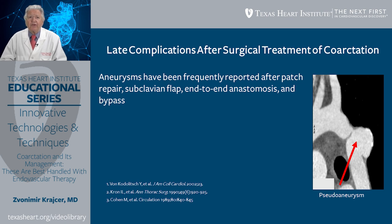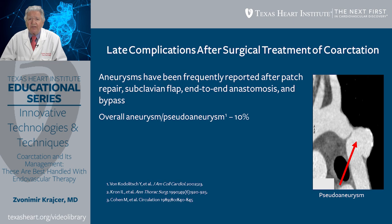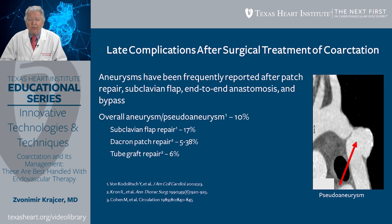I would like to share some of the complications, particularly late complications after surgical treatment of coarctation. Aneurysms have been frequently reported after patch repair, but also after subclavian flap, end-to-end anastomosis, and bypasses. As we can see here, a pseudoaneurysm has formed at the site of previous surgical repair. The overall incidence of aneurysms and pseudoaneurysms after surgical repair is around 10%. After subclavian flap repair it is slightly higher at 17%. After Dacron patch repair it ranges from 5% to 38%, and after tube graft repair around 6%. The overall aneurysm rupture risk is roughly 7% in the literature.